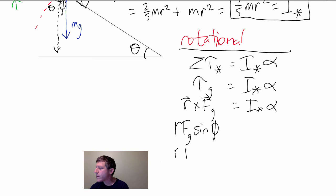This will be R, and I'm going to substitute in this, F G is just M times G times. It will be also equal to sine of theta, the angle right there. That will be I star alpha.